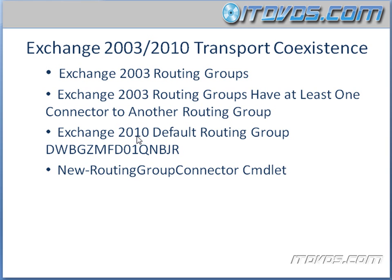That's one reason why we want to plan appropriately and decide which Exchange 2010 servers or sites we want to deploy to first. During the Exchange 2010 installation, a routing group connector is actually created between our Exchange 2010 routing group and the Exchange 2003 routing group. That's how email is passed back and forth between our Exchange 2010 servers and our Exchange 2003 servers.